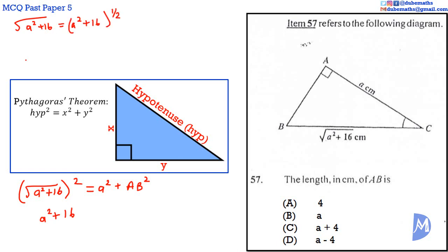So when we have the square root of A squared plus 16 squared, this is the same as A squared plus 16 to the power of a half, squared.